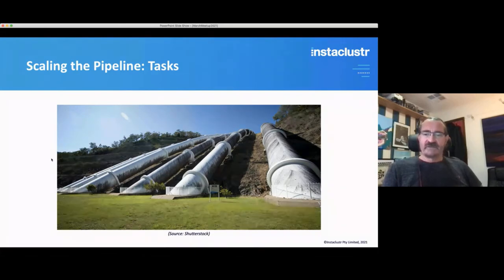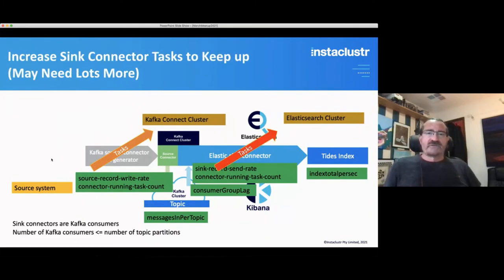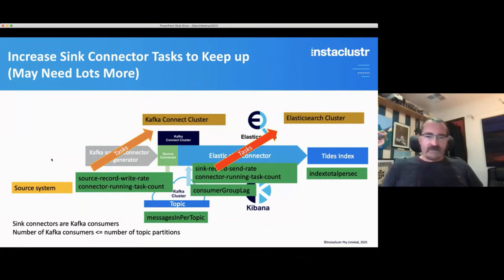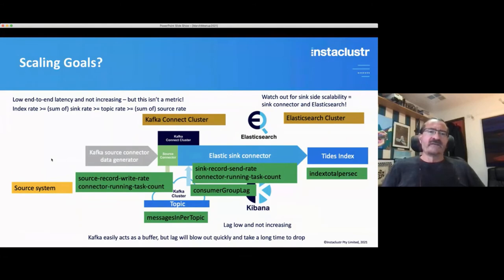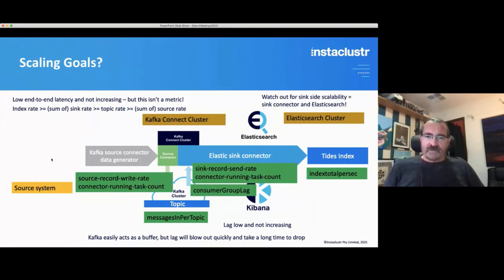To scale the pipeline, we increase the number of tasks — more source connector tasks for more load, and then more sink connector tasks to keep up. You may need quite a lot more sink tasks because of the difference in performance of the systems involved. My scaling goals included low end-to-end latency that doesn't increase. I had to keep track of the fact that the index rate should be greater than the sink rate, which should be greater than the source rate. Also watch out for sync side scalability and the fact that Kafka easily acts as a buffer, but lag will blow out quickly and take a long time to drop.